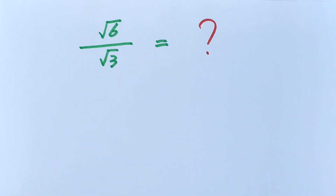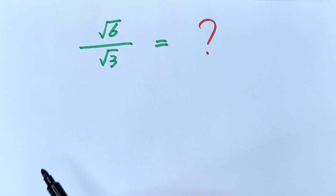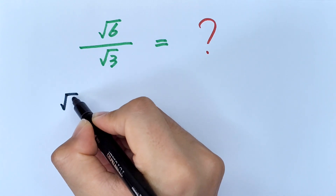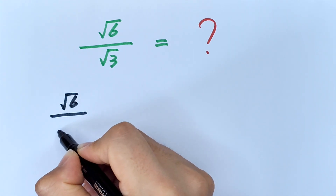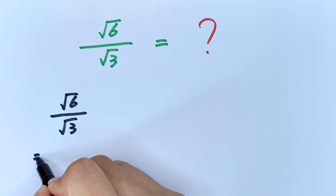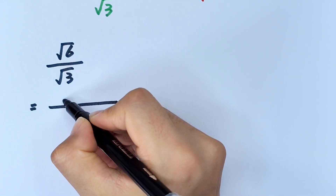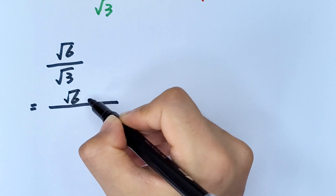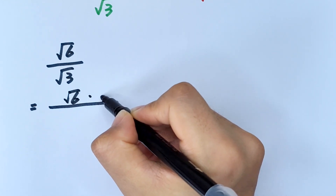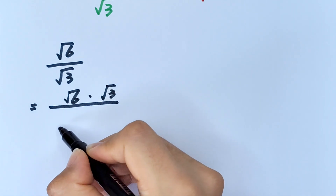Hello everyone, welcome to Math4U. How to solve square root of 6 divided by square root of 3. Square root of 6 divided by square root of 3 equals square root of 6 times square root of 3